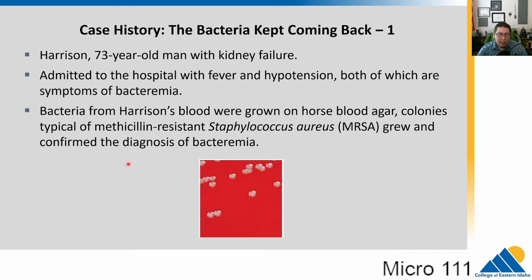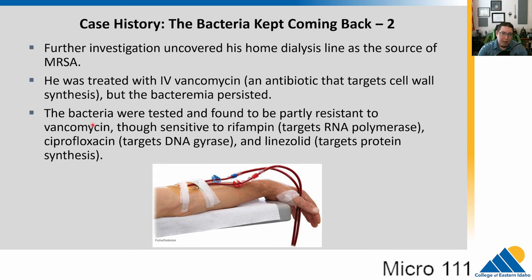They confirm this with additional tests, confirming the bacteremia diagnosis — bacteria growing in his blood, confirmed by culturing. To figure out the source, they look at his home. He is undergoing dialysis due to kidney failure, and they find that his home dialysis line has been contaminated with MRSA. Because that is a direct line into the body, that's how MRSA got into the bloodstream. This is very concerning due to his age and the seriousness — it's an antibiotic-resistant strain and he is not in good health.